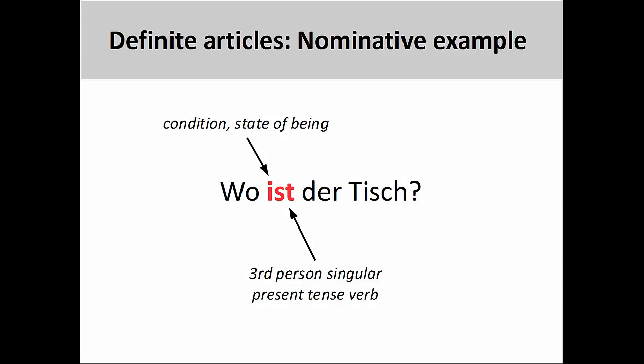In the sentence you see on the screen, Wo ist der Tisch? — Where is the table? — the third person singular verb ist shows no action. It simply reports a condition or state of being.